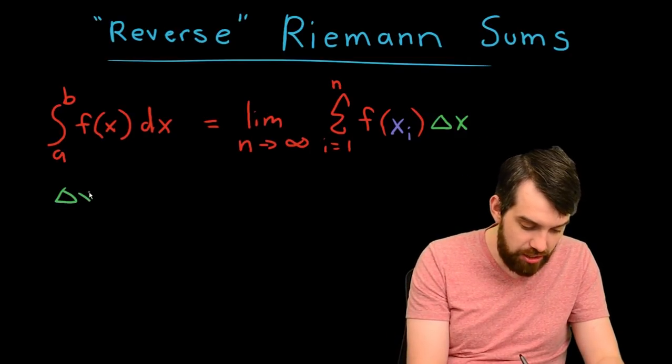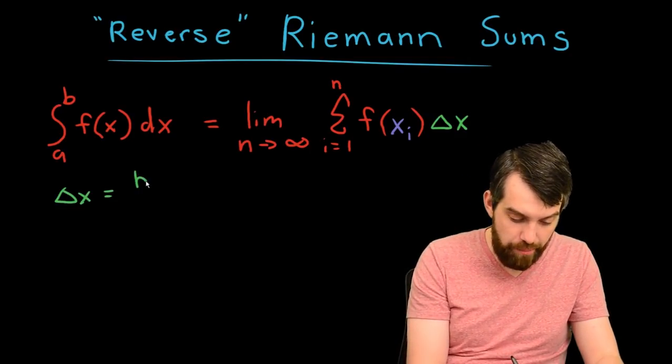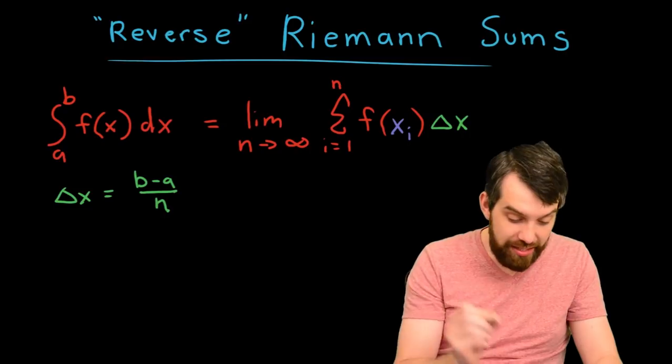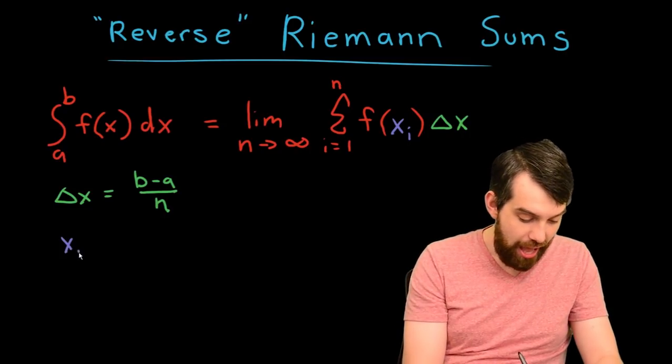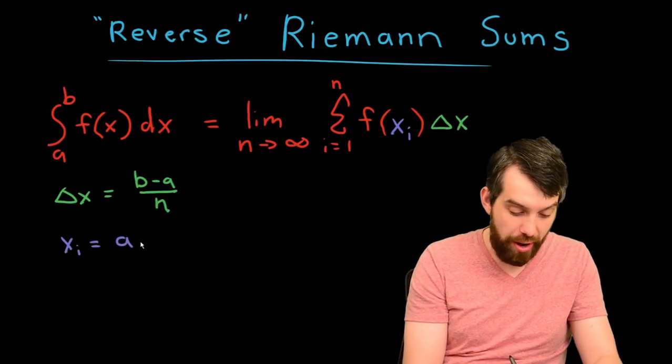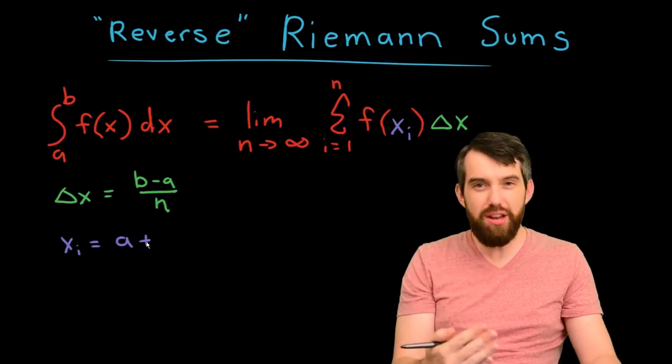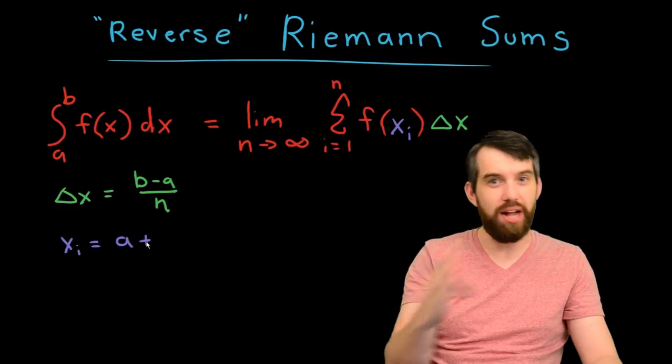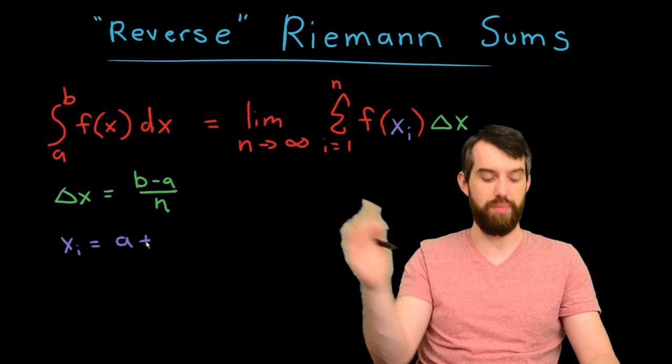The delta x, this is equal to b minus a divided out by n. And the x_i here, this is given by x_i equals whatever the starting point a is, and then you go over 1 delta x, 2 delta x, 3 delta x, as you iterate along in your Riemann sum.